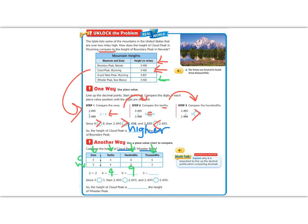So since 5 is greater than 3, then the whole number 2.495 is greater than 2.493. And then if we switch the numbers, we switch the sign, and 2.493 is less than 2.495.